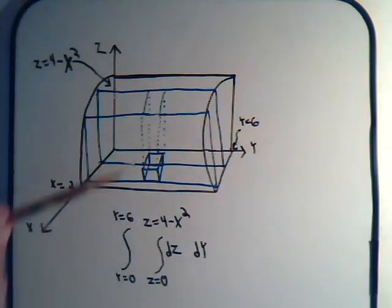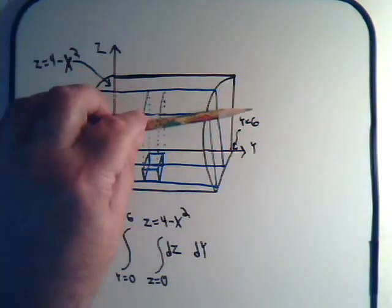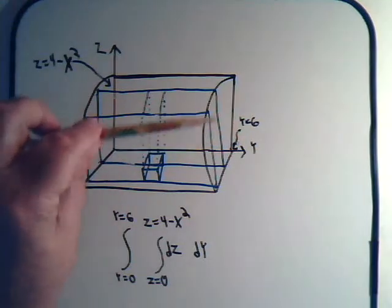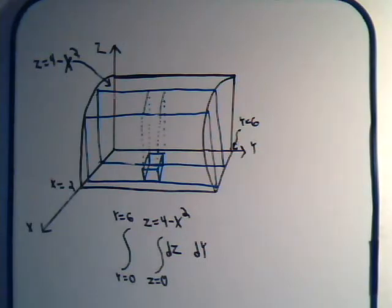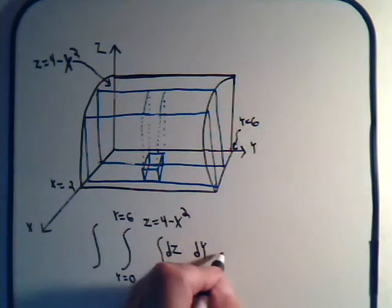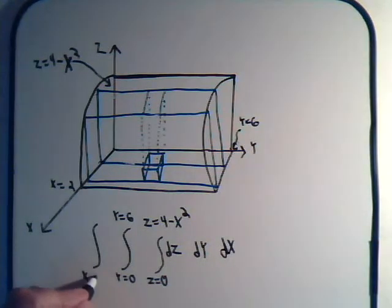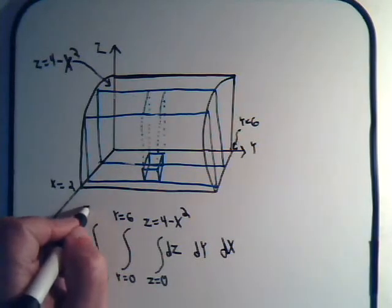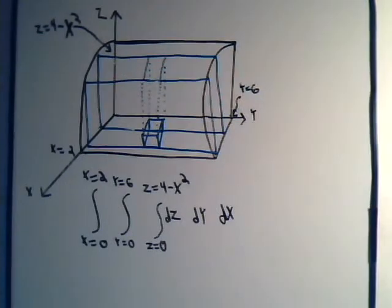We then place the vertical slices side by side, starting at x equals 0 and continuing until x equals 2, so we sum in the x direction with dx from x equals 0 to x equals 2. That completes our triple integral setup.